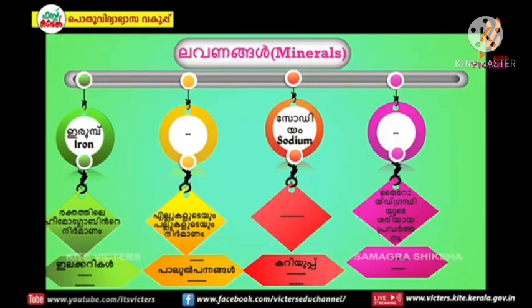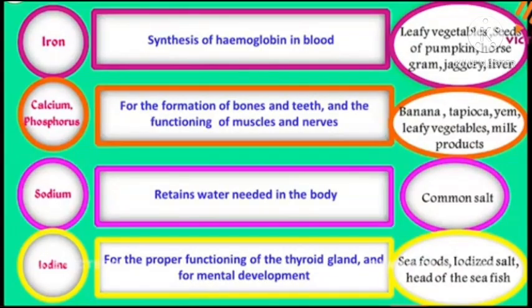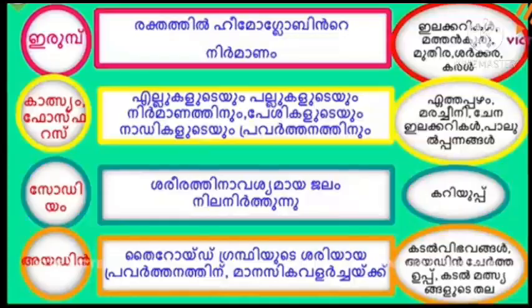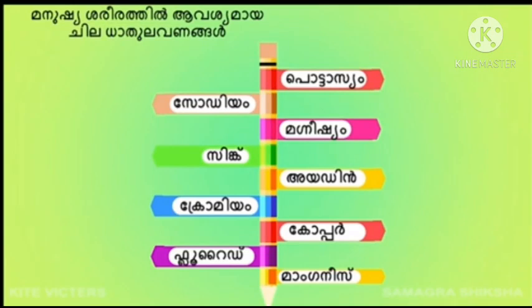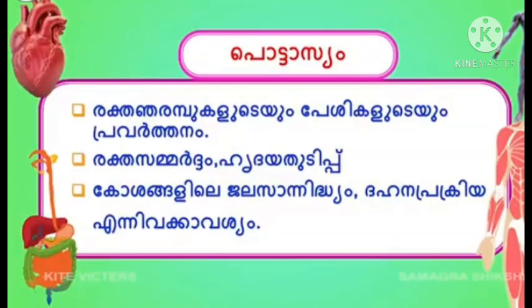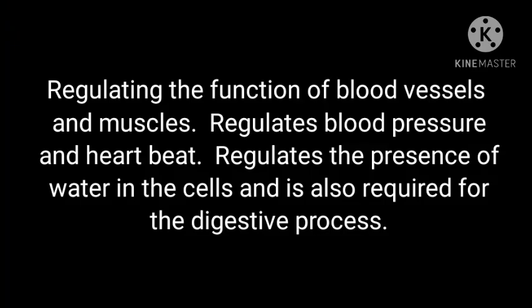This is the first activity. You can fill it in the text box. The minerals include potassium, sodium, magnesium, zinc, iodine, chromium, copper, fluoride, and manganese. You can fill in the table with potassium and calcium. Potassium regulates the functions of blood vessels and muscles, regulates blood pressure and heartbeat, and regulates the presence of water in the cells. It is also required for the digestive process.